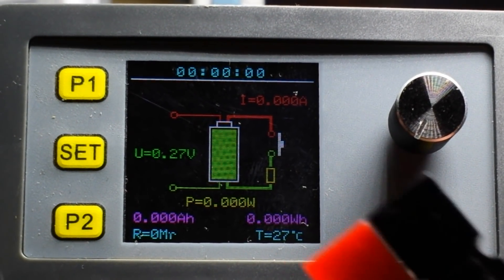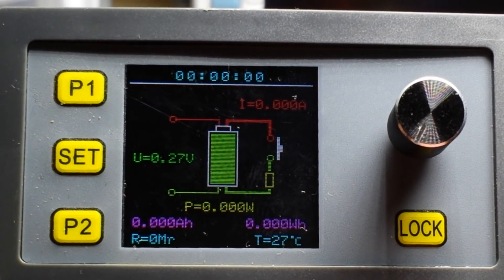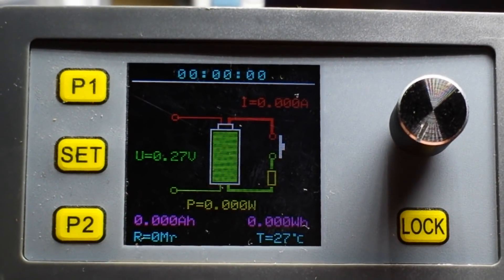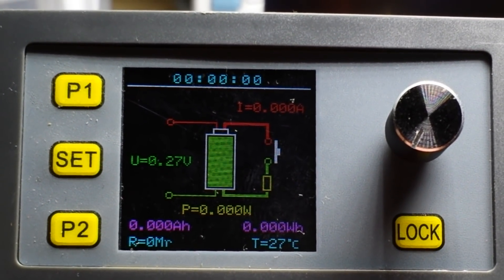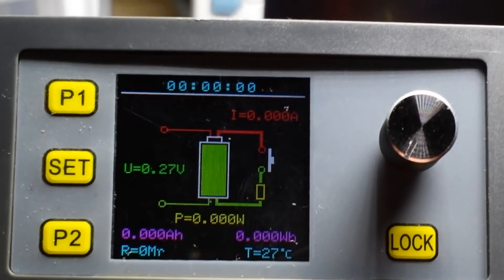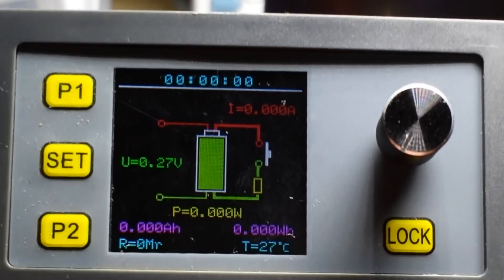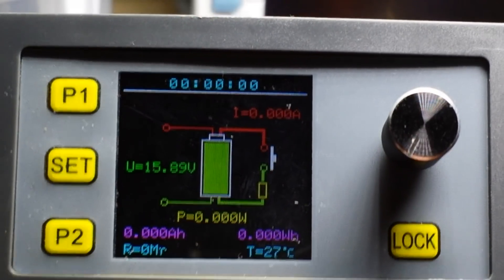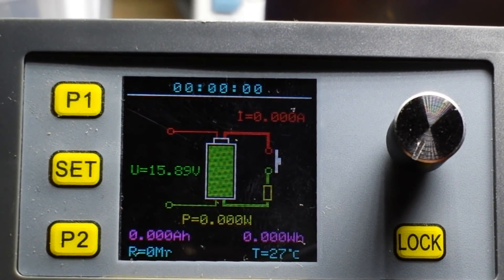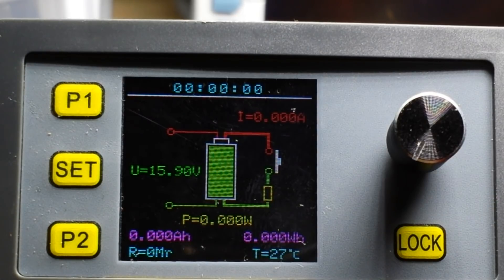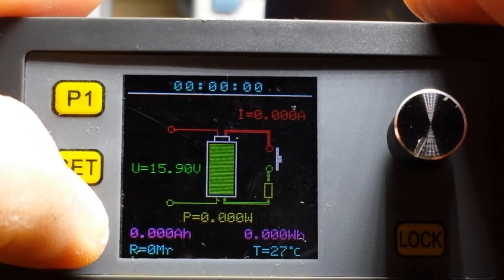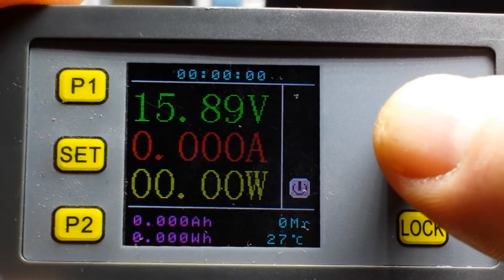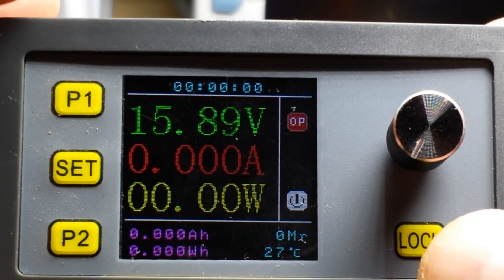And I will plug in the power connectors or battery power here. Black and one. All right, there's the red and now you can see we have 15.89 volts. Go to page two.